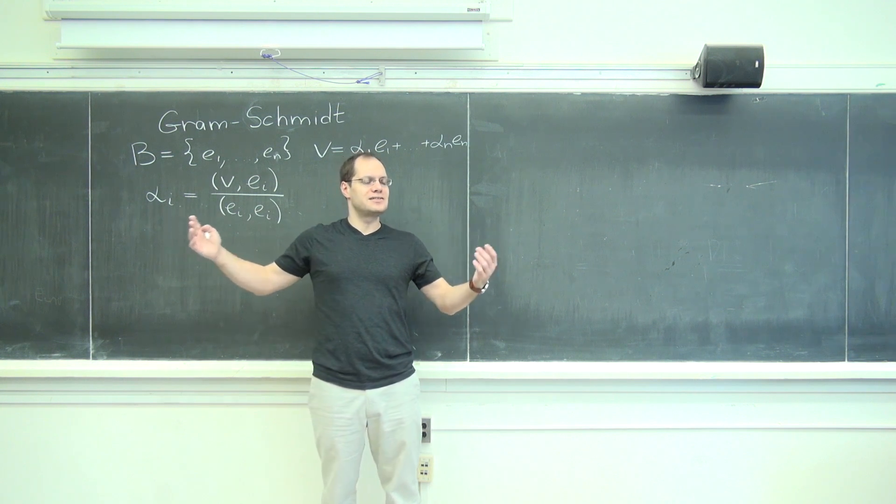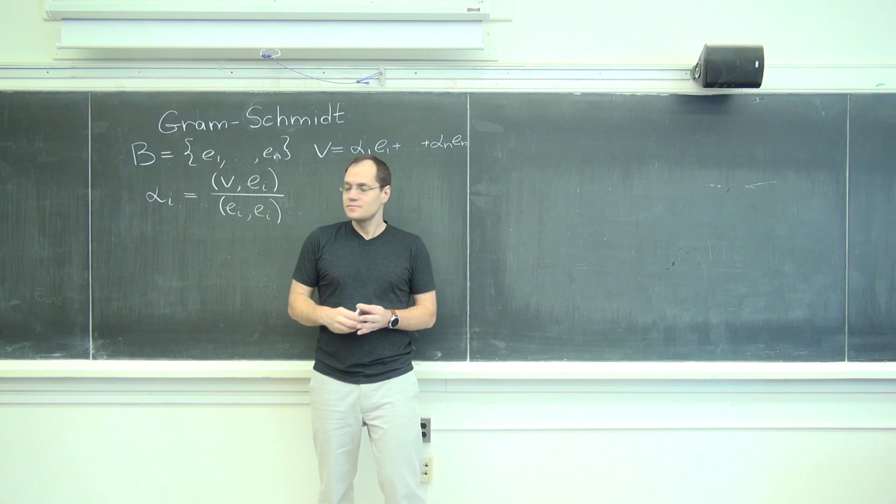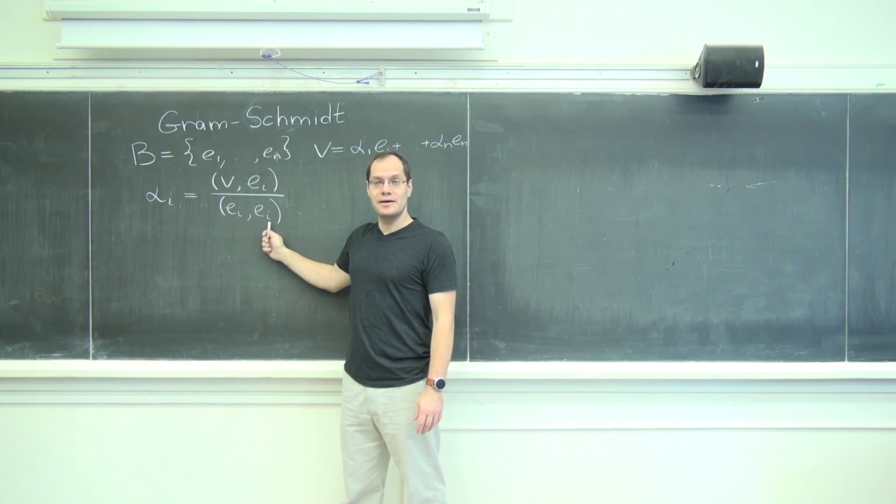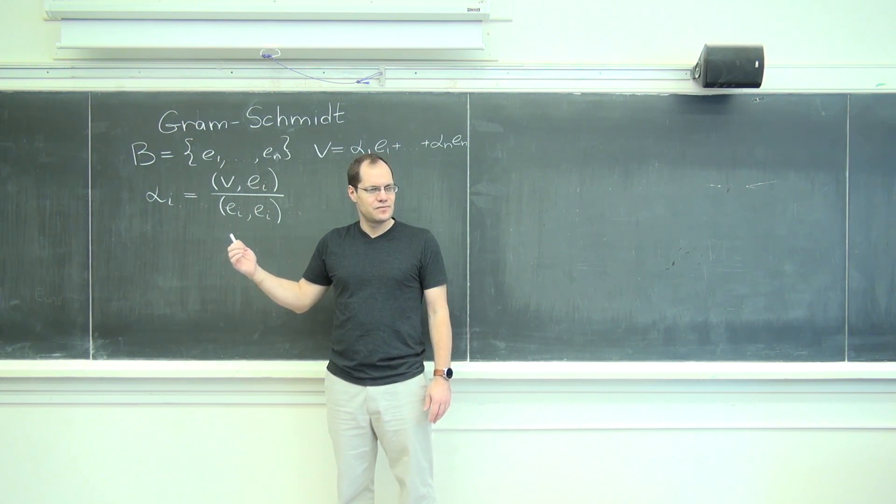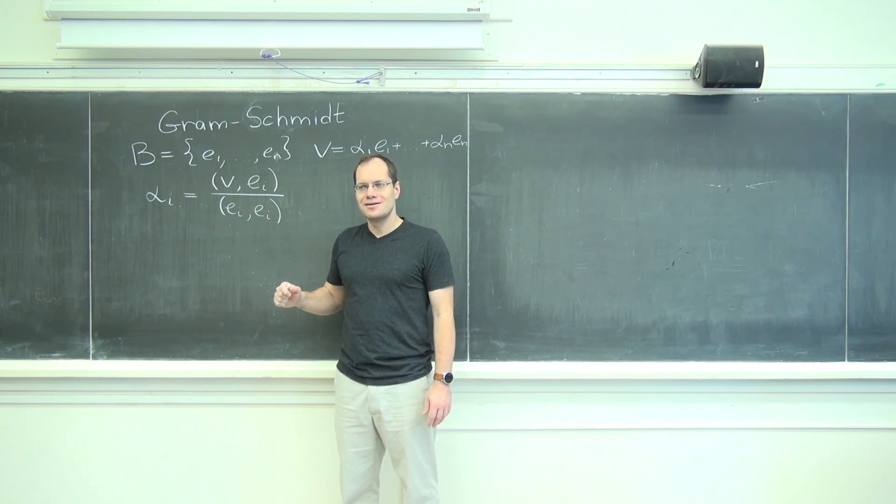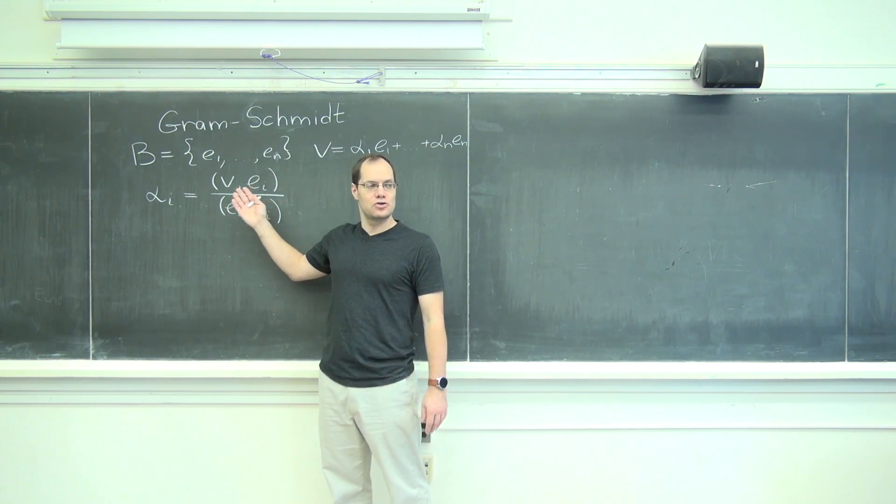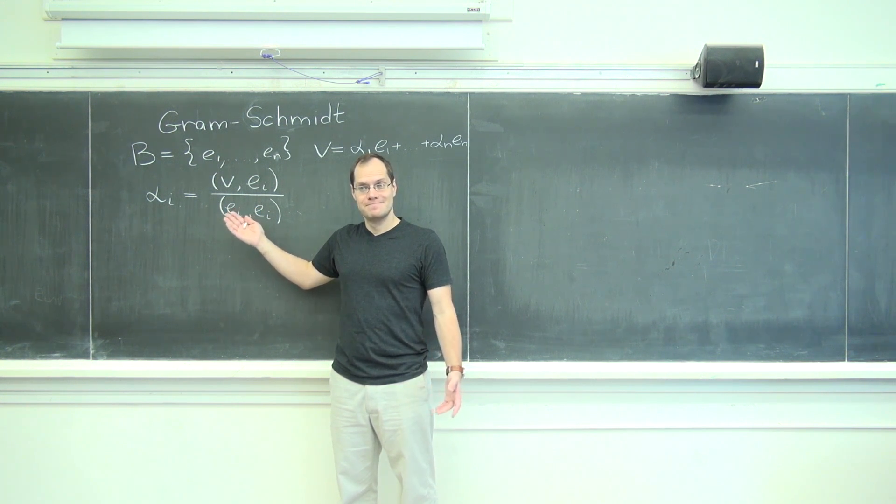Do things get that much better when you go to an orthonormal basis? They don't really, it's just that the denominator goes away because it's one. That's a small advantage in analytical work. It's an advantage that's not worth it because you end up with lots of square roots in trying to make everything unit length. Make sense?